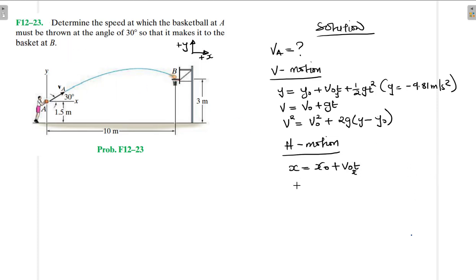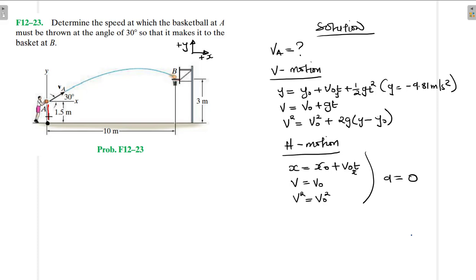The final velocity is going to be equal to initial velocity — so velocity in the horizontal direction is constant. The same applies: v-final squared equals v-initial squared; acceleration here is equal to 0. My reference will be taken from this point here. Let me give you all the initial boundary conditions: we have y-initial equal to 1.5.